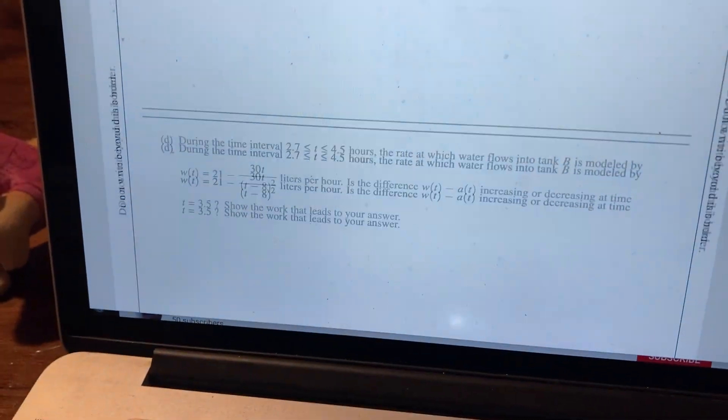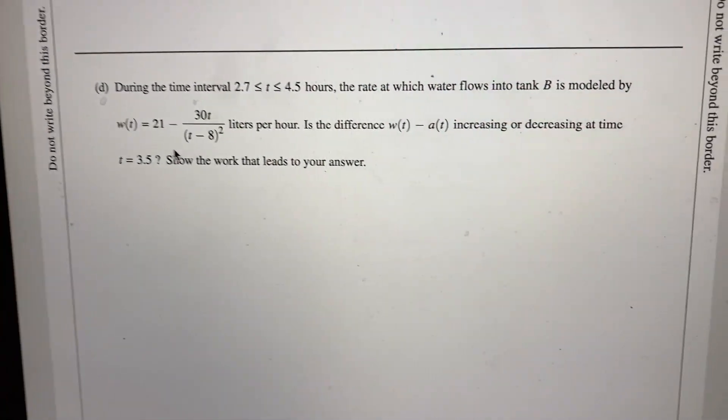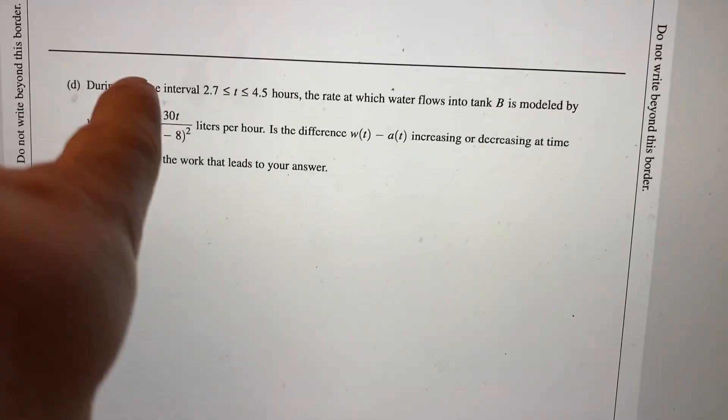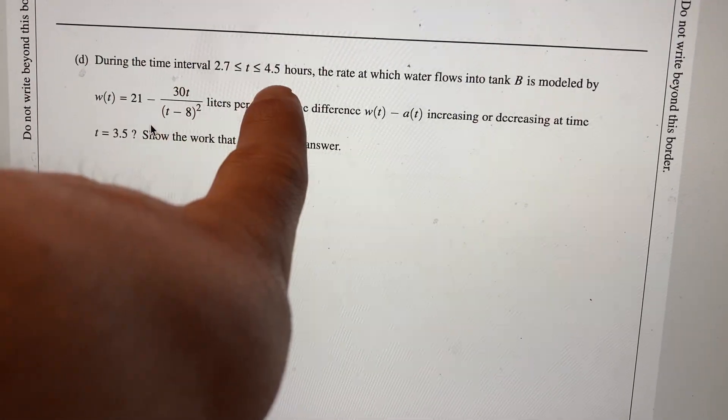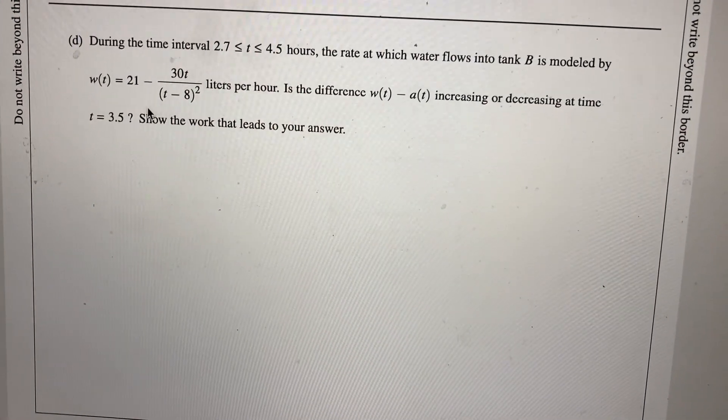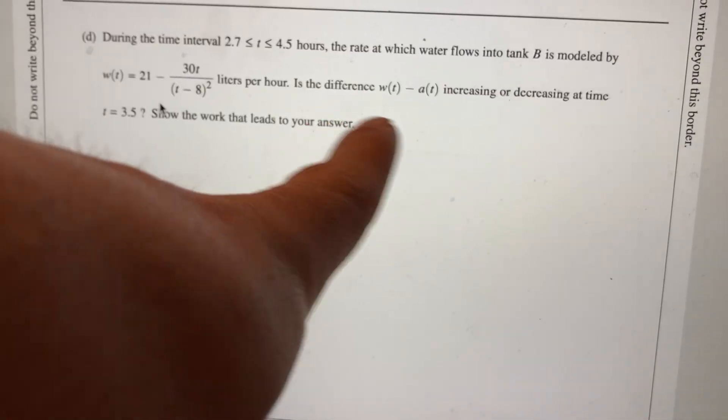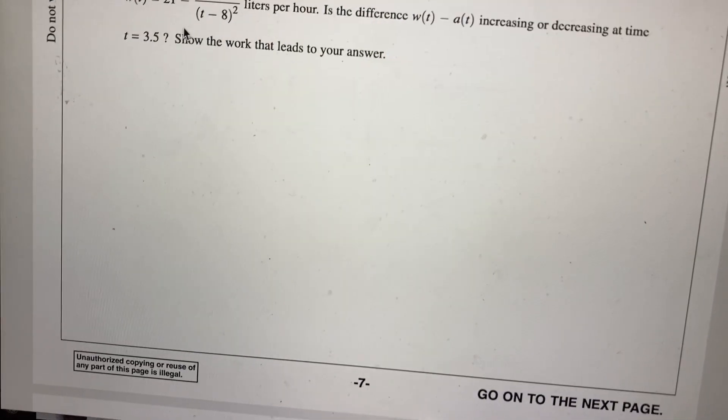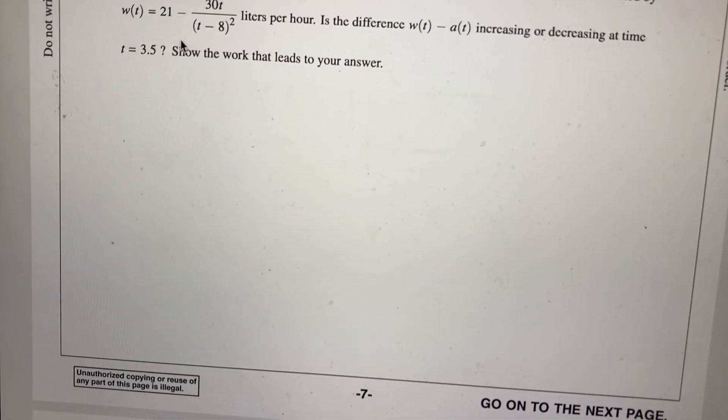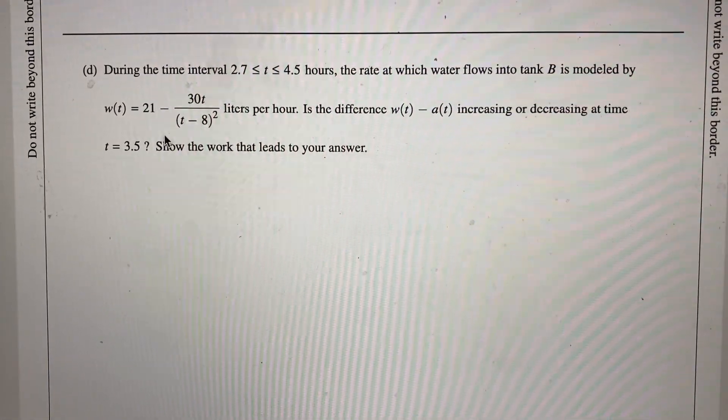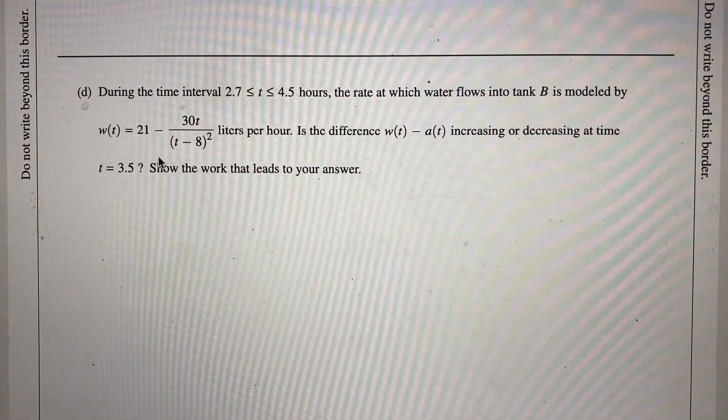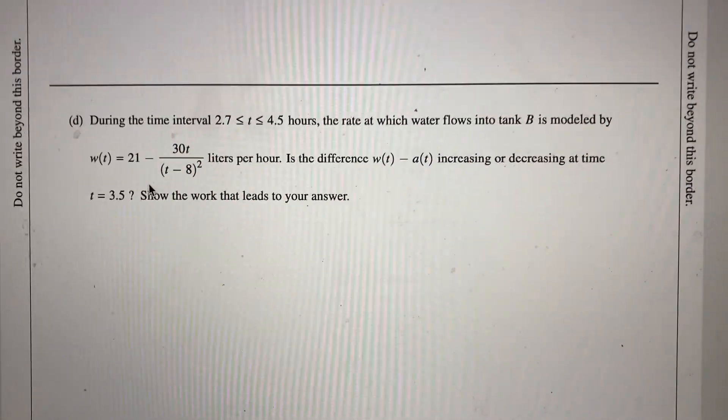Okay, last one, D. During this time interval, the rate at which water flows into tank B is modeled by this equation. Is the difference of those two increasing or decreasing at that time t equals 3.5? Show the work that leads to your answer.